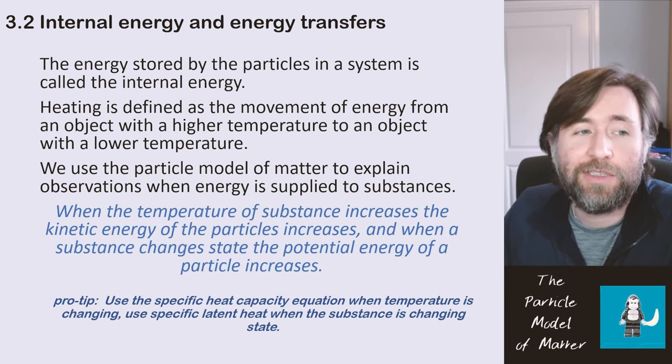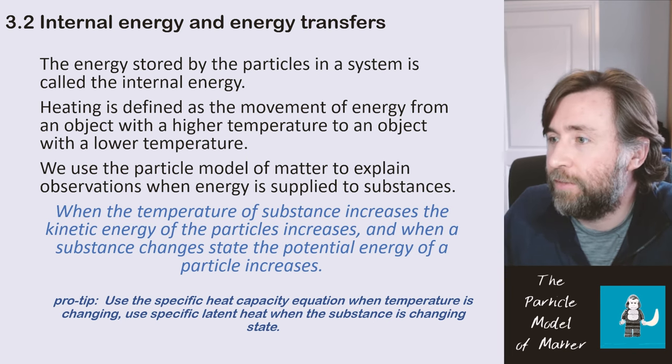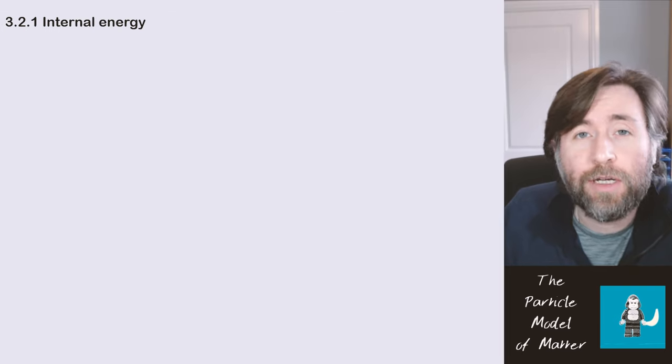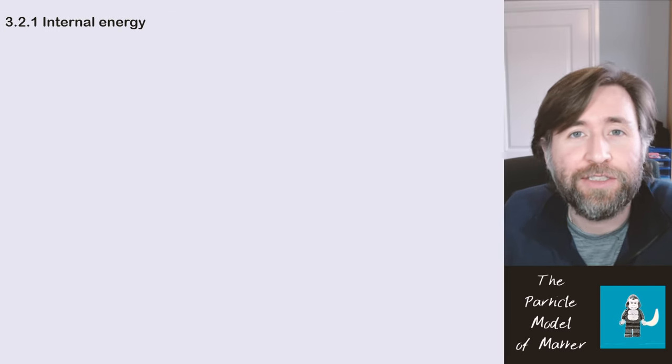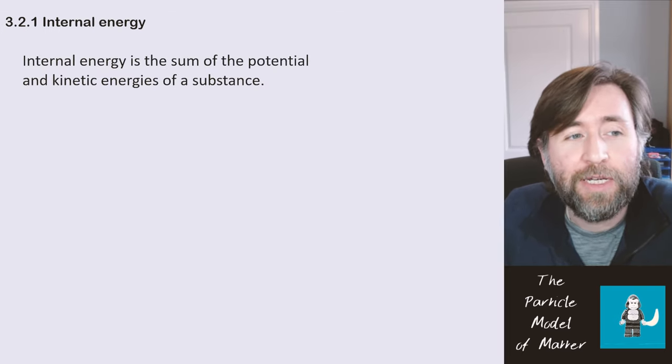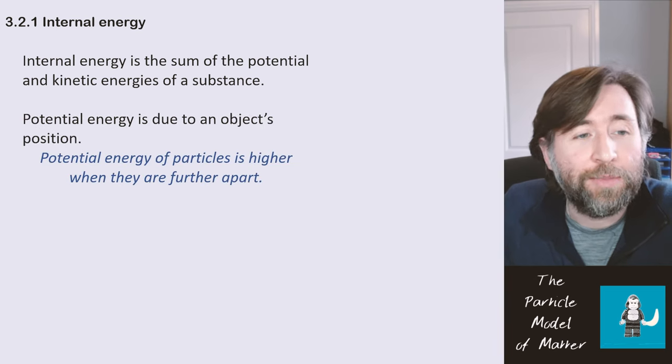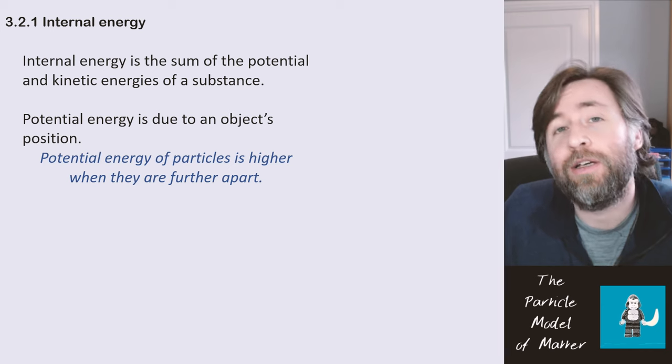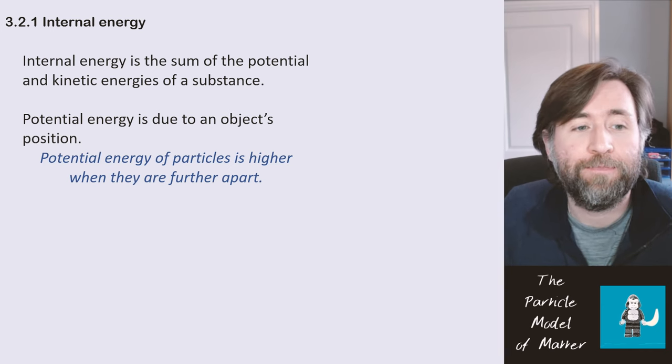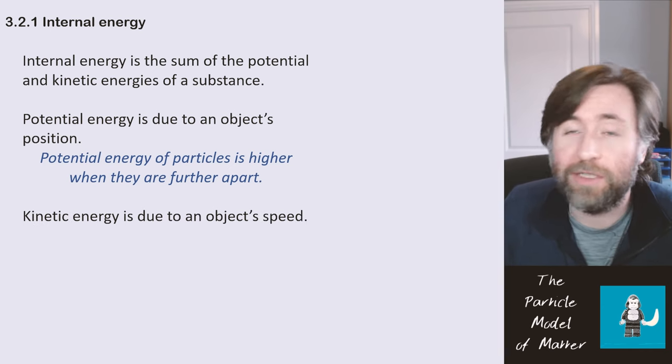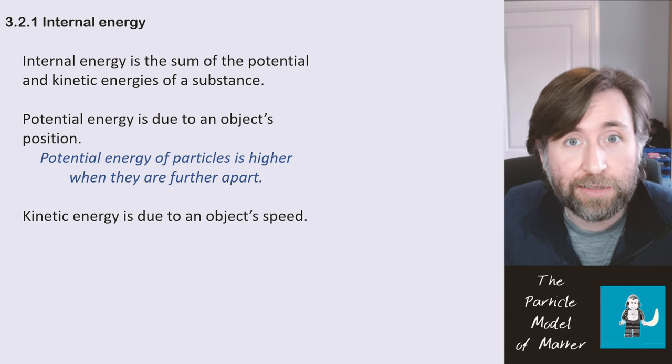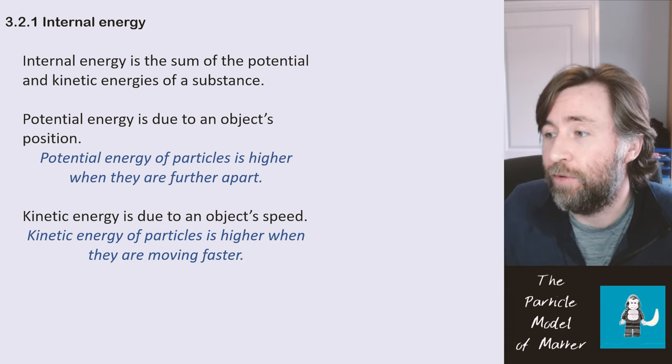The energy stored by the particles in a system is called its internal energy. The internal energy is the sum of the potential and kinetic energies of the particles of a substance. Potential energy is due to something's position, so the potential energy of the particles is higher when they're further apart. Kinetic energy is due to an object's speed. The kinetic energy of the particles is higher when they're moving faster.